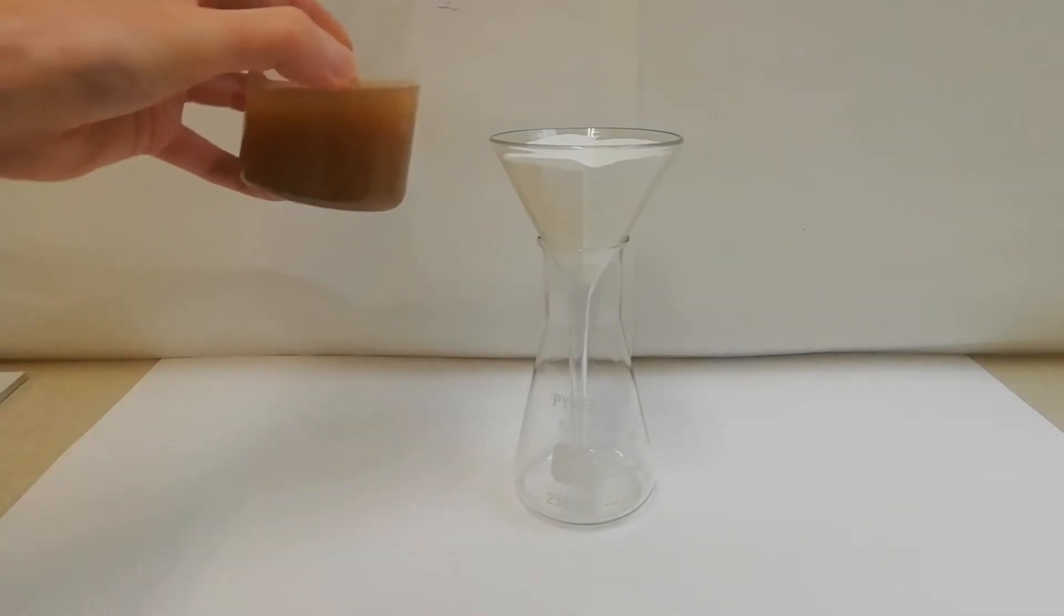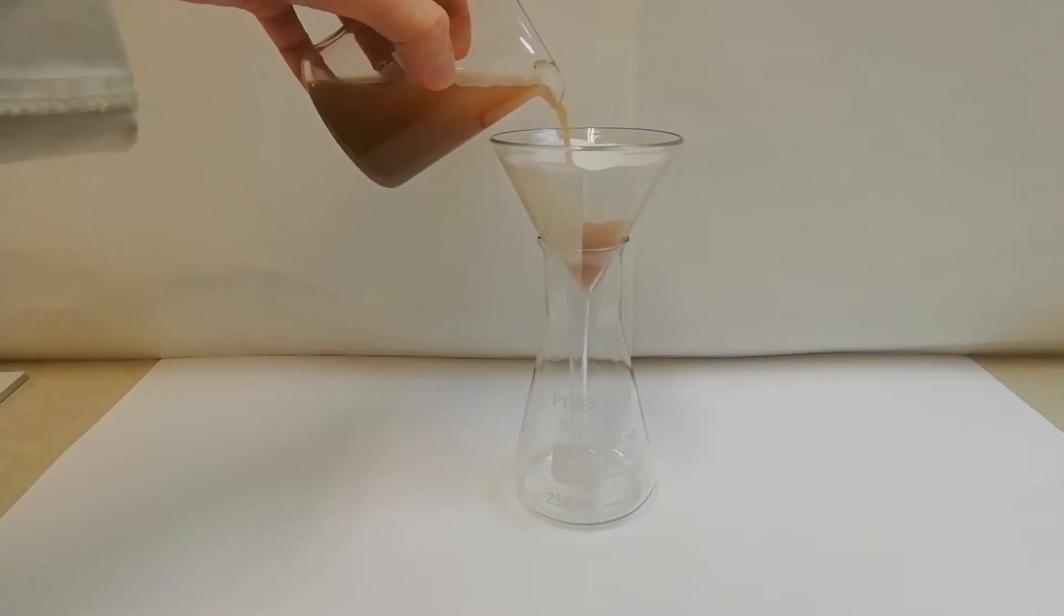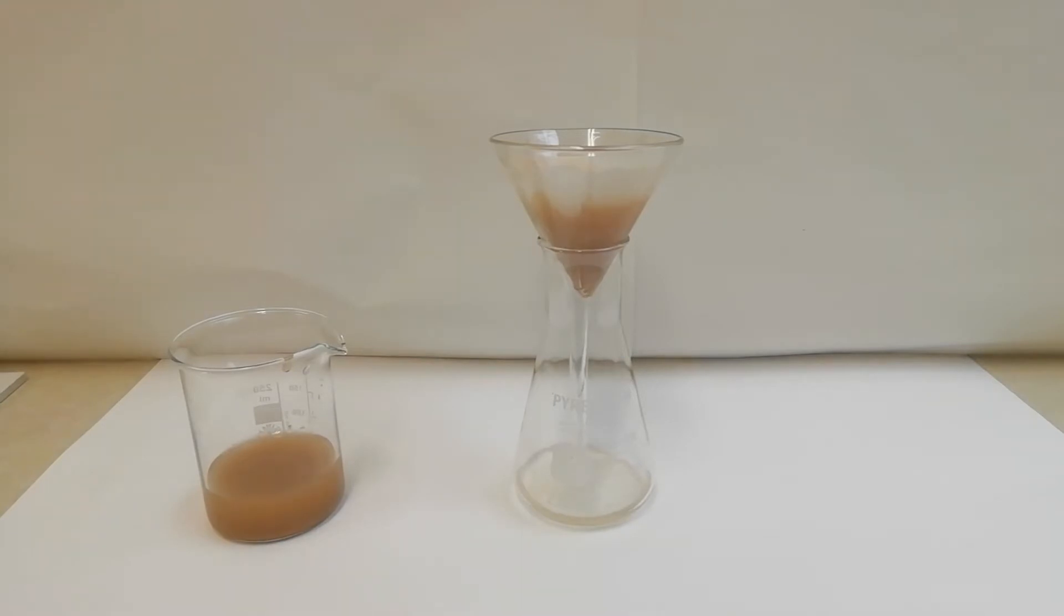So now I'm going to take our beaker here and carefully pour it through the filter paper which is in the filter funnel. You don't want to go over there otherwise the dirty brown water will end up in our conical flask. As you can see we've got a nice clear water coming out here, it's completely colourless. I'll get back to you when it's finished filtering.